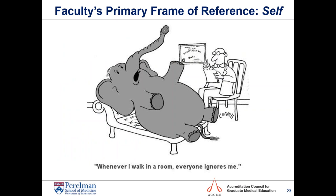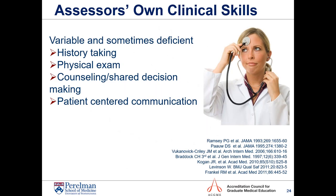An important issue is that the faculty's primary frame of reference for judging clinical skills is self. That's fine under two conditions: self is competent, and self can describe what competent looks like. Given the variability challenge among faculty, the elephant in the room may be our own skills. A series of studies has shown that faculty clinical skills can be variable and even deficient across multiple areas — many of us were simply never well trained in these skills.